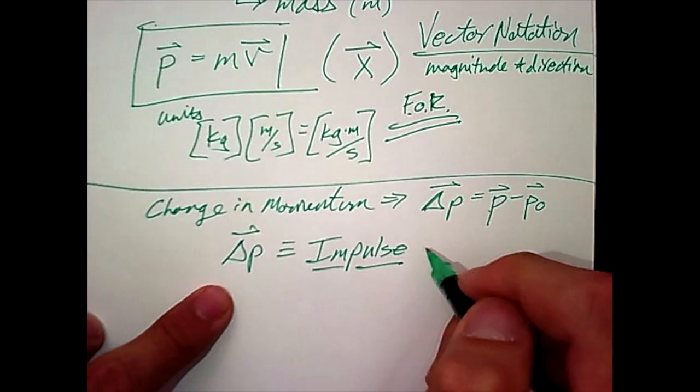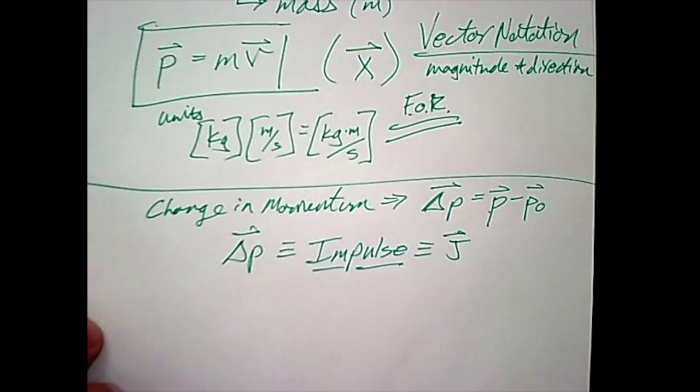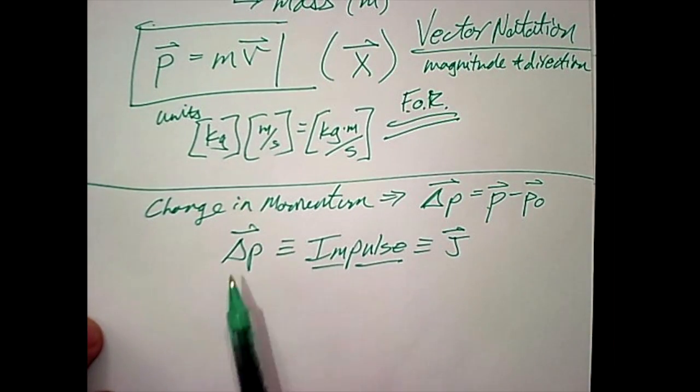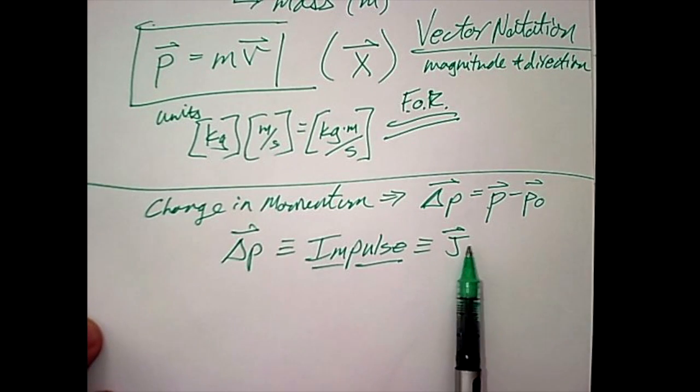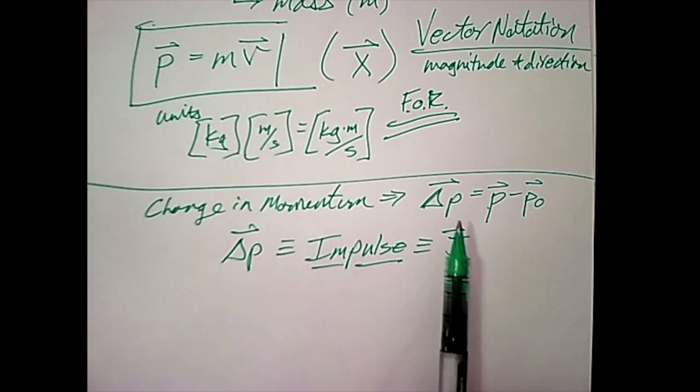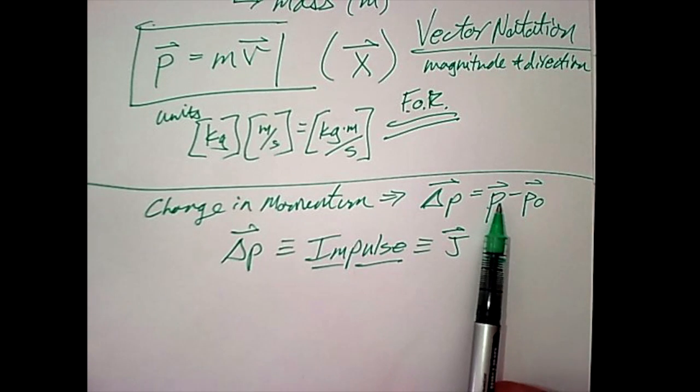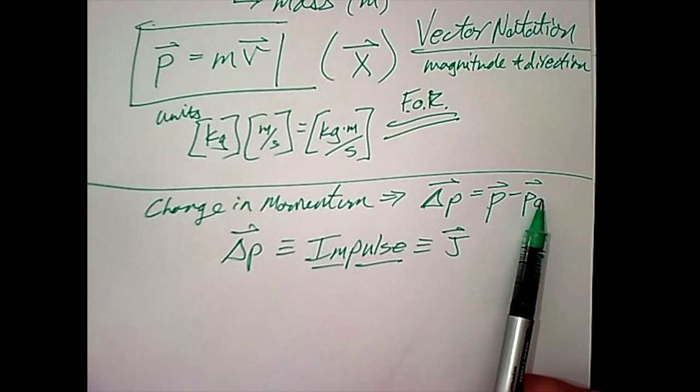You will see sometimes that this is written as capital J, depending on the text. I tend to stick to just delta p because J, also without the vector notation, would be the units for energy joules. So I don't use the J, but you may come across that in the future. What's important is that delta p obviously can be calculated by determining the momentum of the system after some event minus the momentum of the system prior to some event.